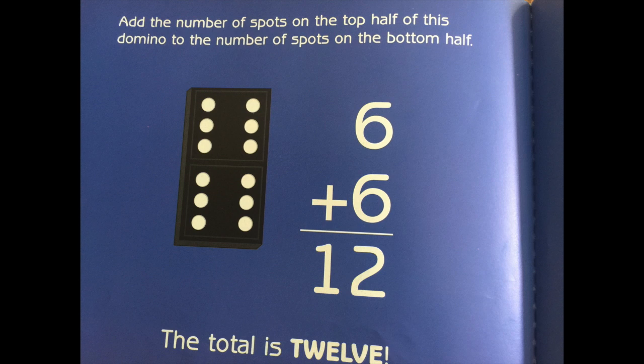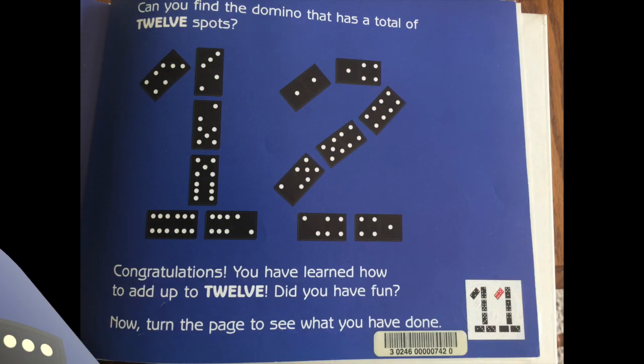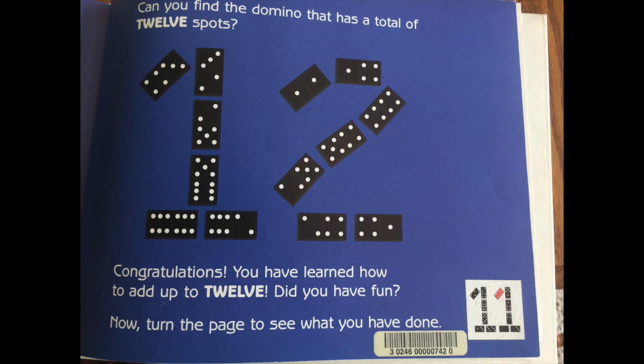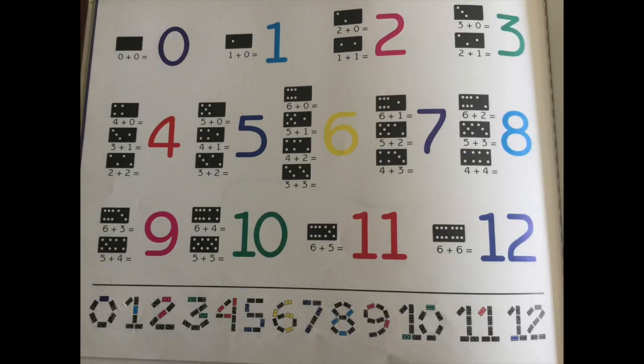Add the number of spots on the top half of each domino to the number of spots on the bottom half. Six plus six, twelve. The total is twelve. Can you find the domino that has a total of twelve spots? Congratulations! You have learned how to add up to twelve. Did you have fun? Now turn to the page to see what you have done.